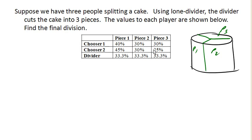So chooser one, this is one of our people, values piece one here as 40% because, you know, maybe it's got some fancy decoration on it that they really like. And the other two pieces they value at 30%. Notice that this is the only piece, piece one, that this person values as a fair share.